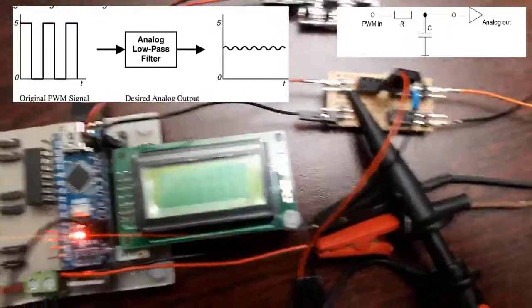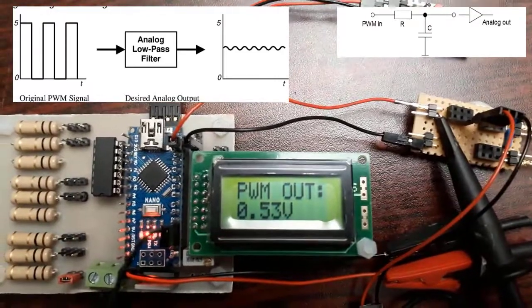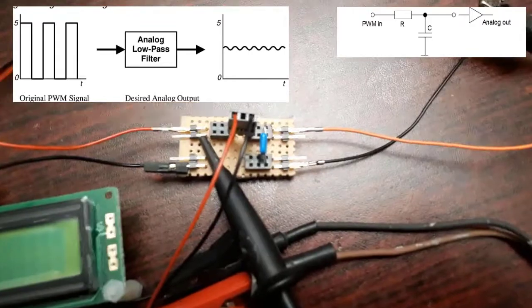I've got an Arduino setup here that is outputting a PWM signal on pin 11 and I'm feeding it into a low pass filter as you can see here.